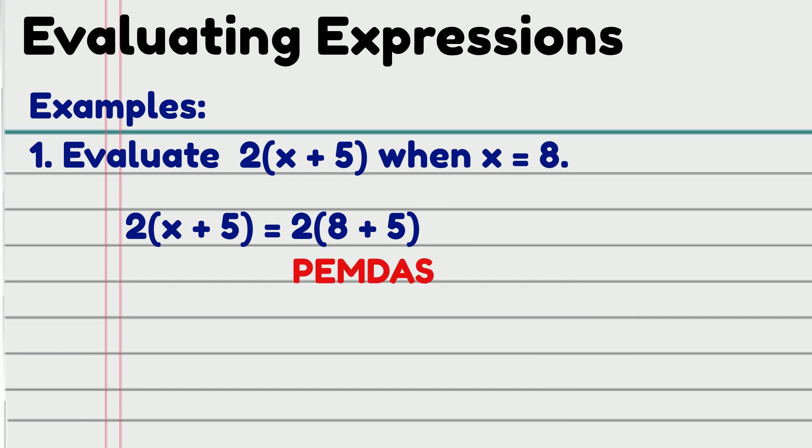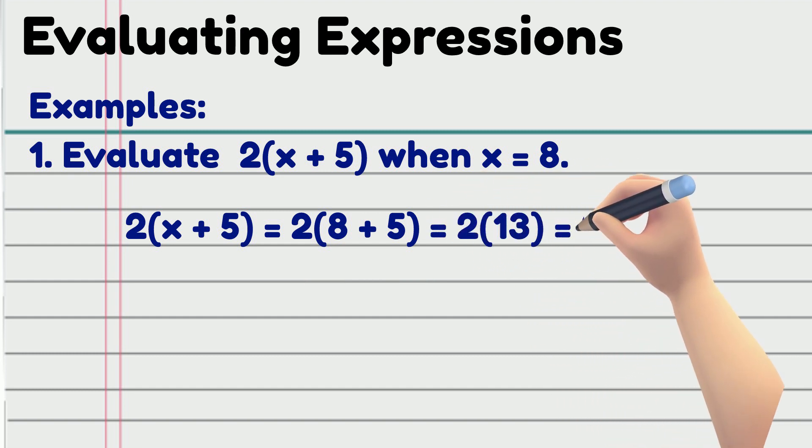From the order of operation rule, first evaluate whatever's inside the parentheses. So, for this case, 2 times the quantity 8 plus 5, becomes 2 times 13, which is then, equal to 26.